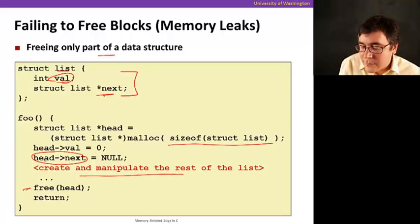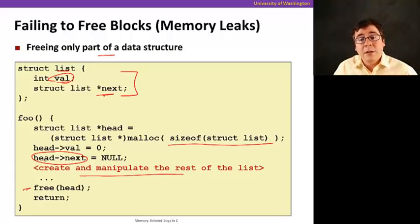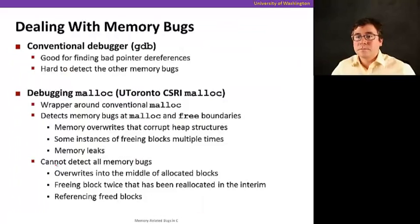And then I create and manipulate the rest of the list, but then I just free head. But for each element, I'm going to do a malloc. But when I do free head, I'm just going to free the first one. So you have to be careful, not the rest. So you have to be careful to, if you have a linked list, and you're going to allocate each element of the linked list separately, when you free it, you free all of them. You traverse it and free all of them. Otherwise, you're going to have memory leak.